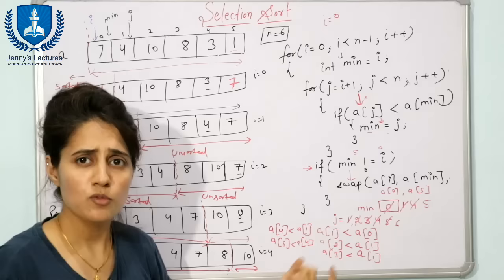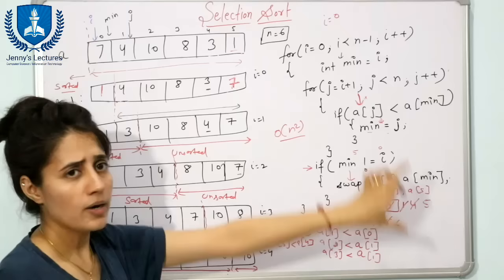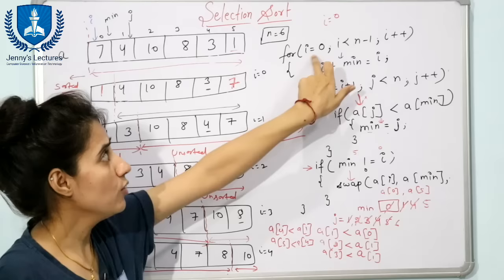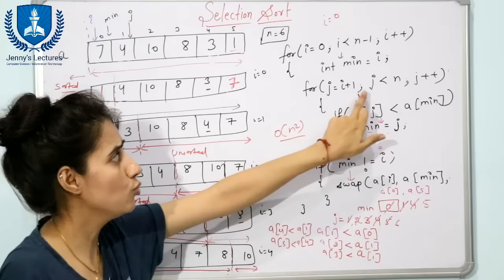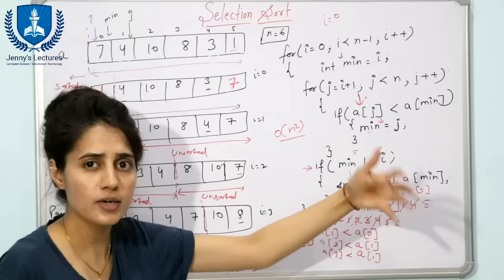Now what about the time complexity? The time complexity of selection sort is O(n²) in both worst case and best case. Because the inner loop runs approximately n times for each value of i — when i=0 it goes from 1 to n, when i=1 from 2 to n, and so on — giving n² total iterations. This is all about selection sort. In the next video I am going to discuss quick sort.